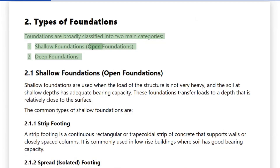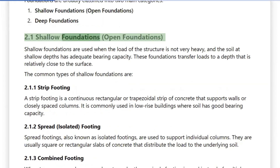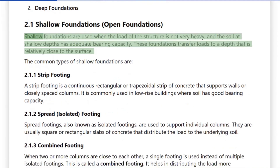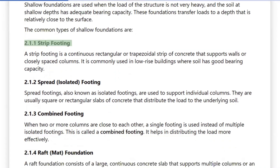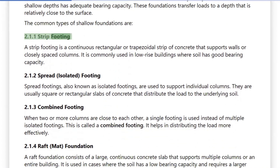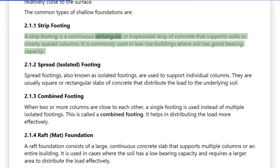1. Shallow Foundations (Open Foundations) and 2. Deep Foundations. Shallow foundations are used when the load of the structure is not very heavy and the soil at shallow depths has adequate bearing capacity. These foundations transfer loads to a depth relatively close to the surface. 2.1.1 Strip Footing: A strip footing is a continuous rectangular or trapezoidal strip of concrete that supports walls or closely spaced columns. It is commonly used in low-rise buildings where soil has good bearing capacity.